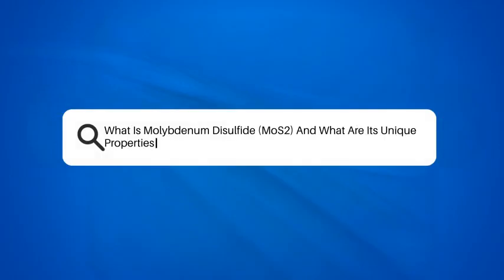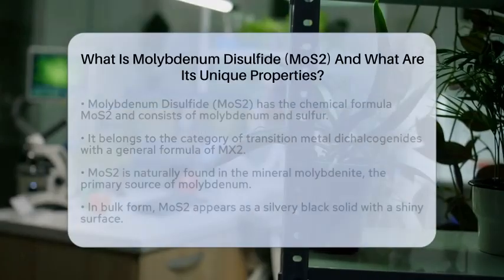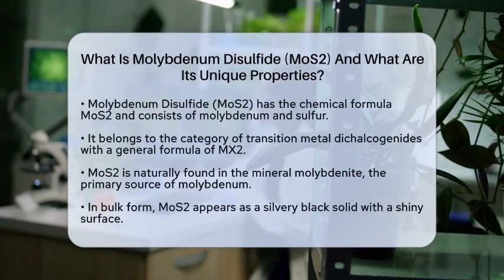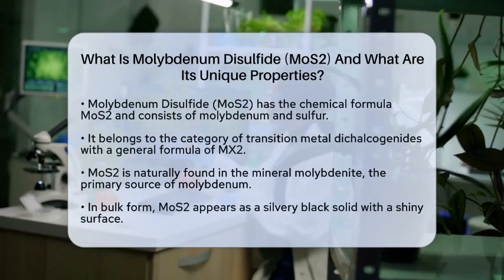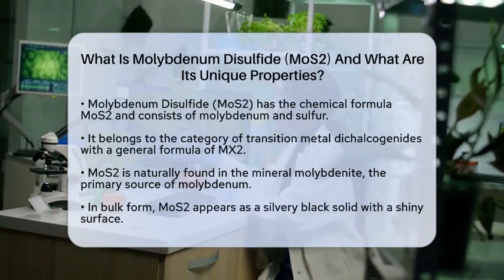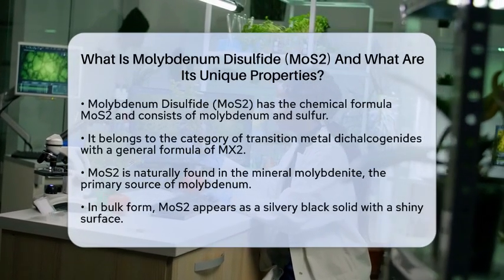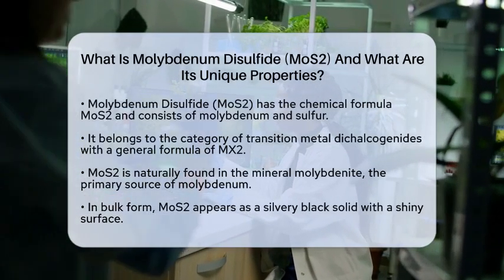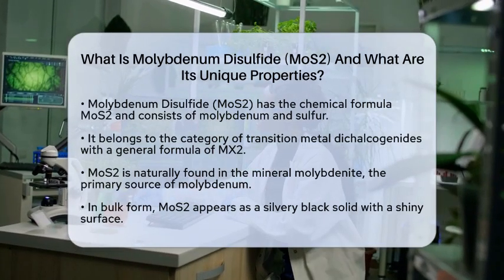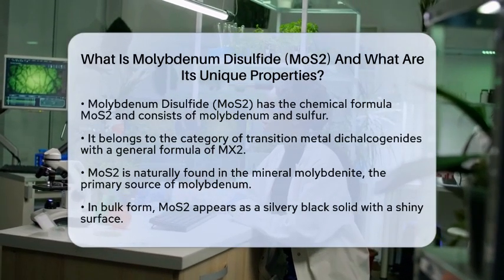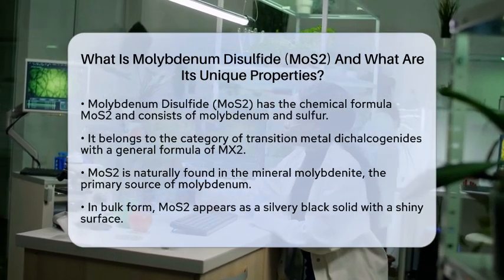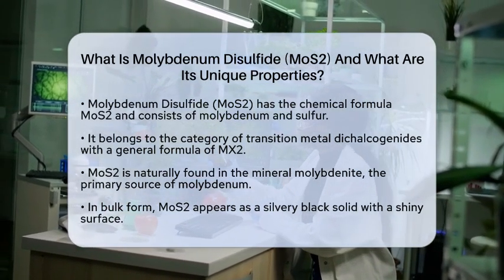What is molybdenum disulfide, MoS2, and what are its unique properties? One fascinating example of modern materials is molybdenum disulfide, which has the chemical formula MoS2. This compound consists of molybdenum and sulfur, and falls under the category of transition metal dichalcogenides.